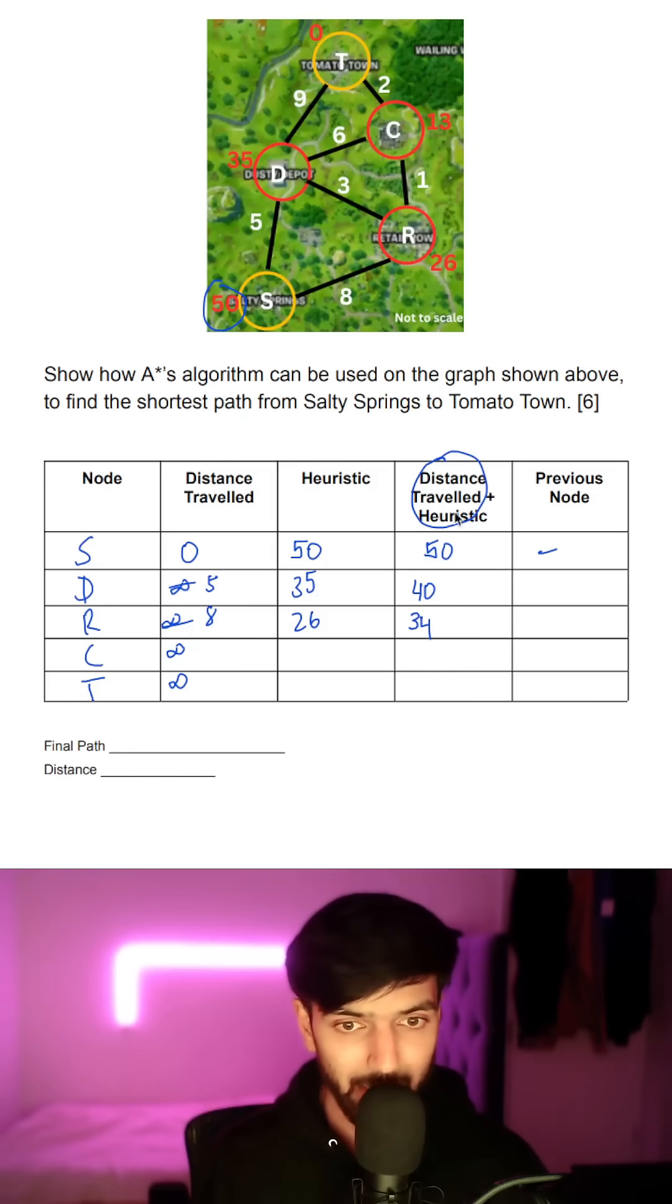And then you pick the node that has the smallest distance traveled plus heuristic value. So in this case it's R.